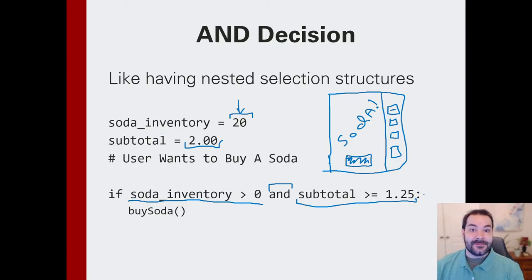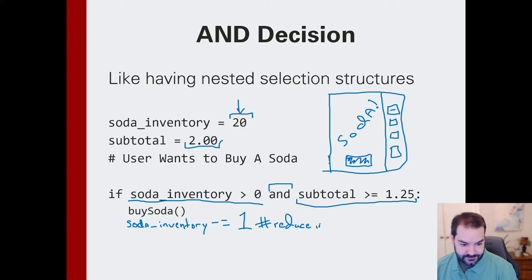And subtotal is greater than the cost of the soda. Again, dollar twenty-five for this. If that's the case, I can go buy a soda, and I can even do some more work off of this. Soda inventory minus equals one. And again, what that will do is reduce inventory by one. And so that entire process can just continue to repeat. And so another person could come in and try and buy a soda, and so on and so on.